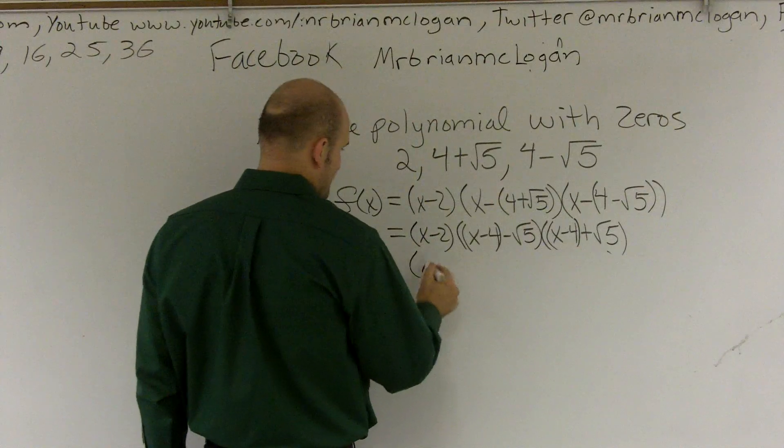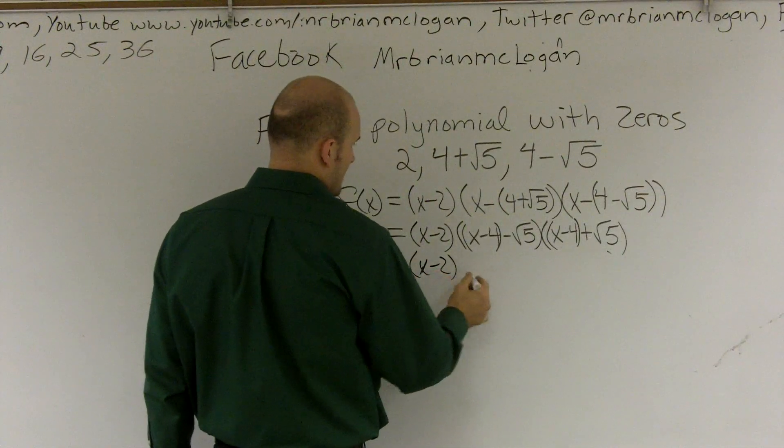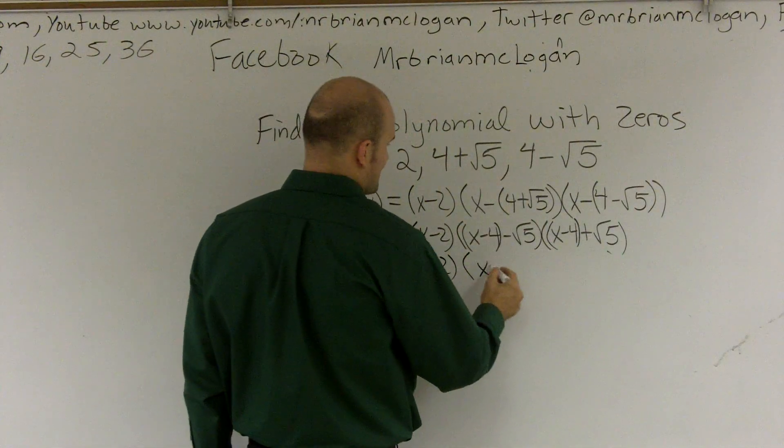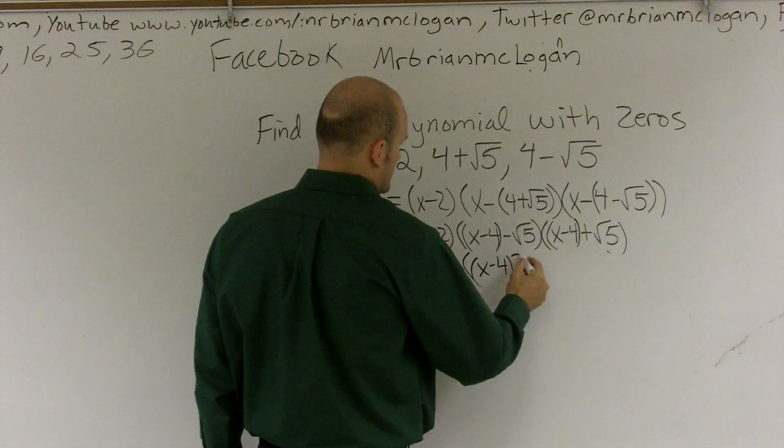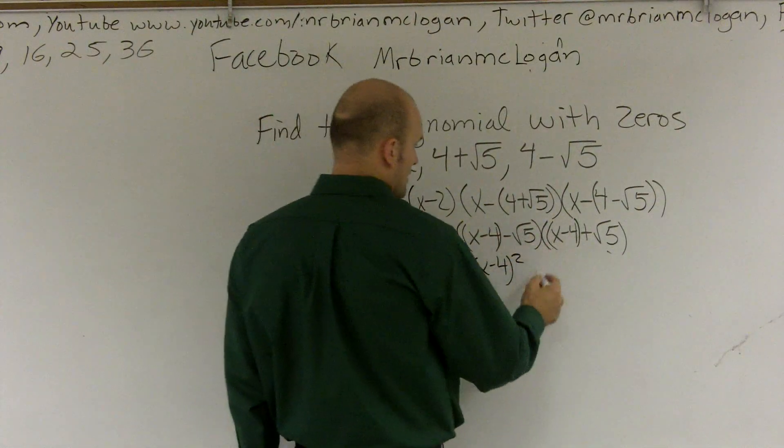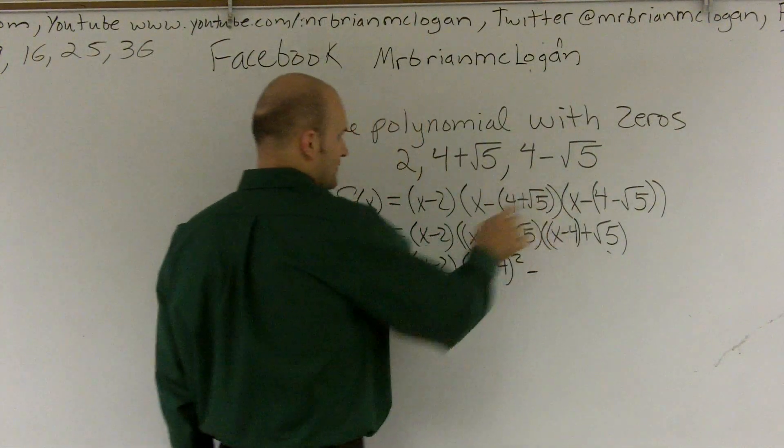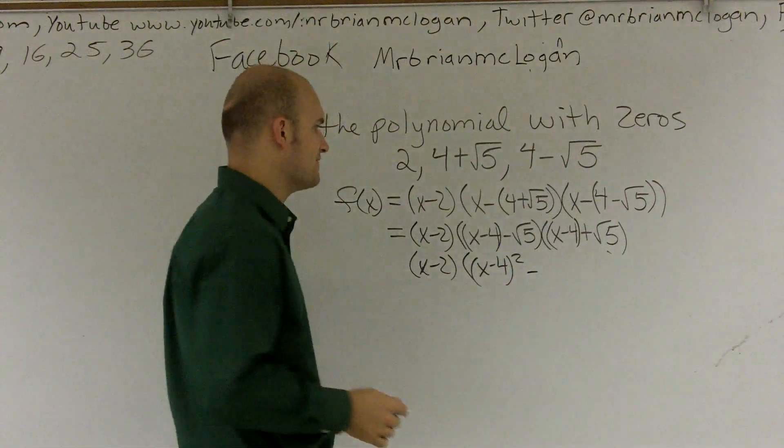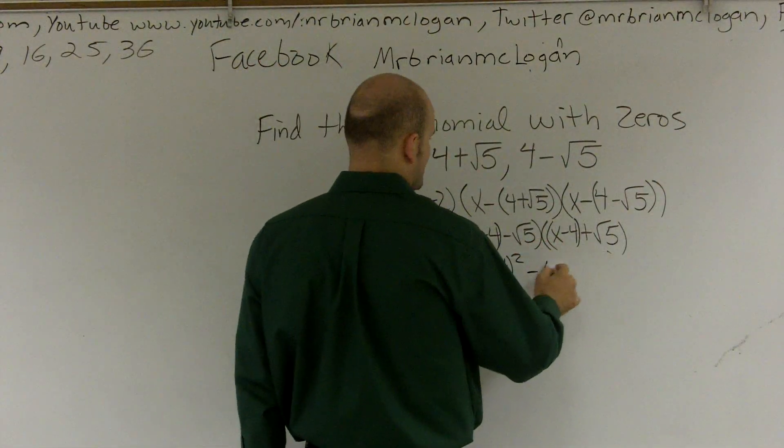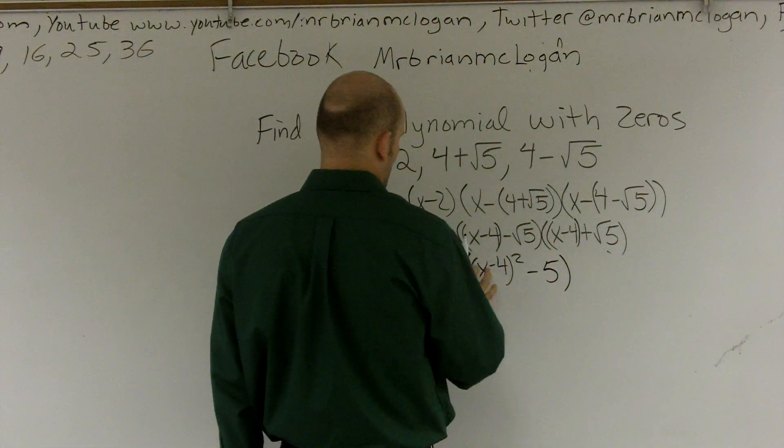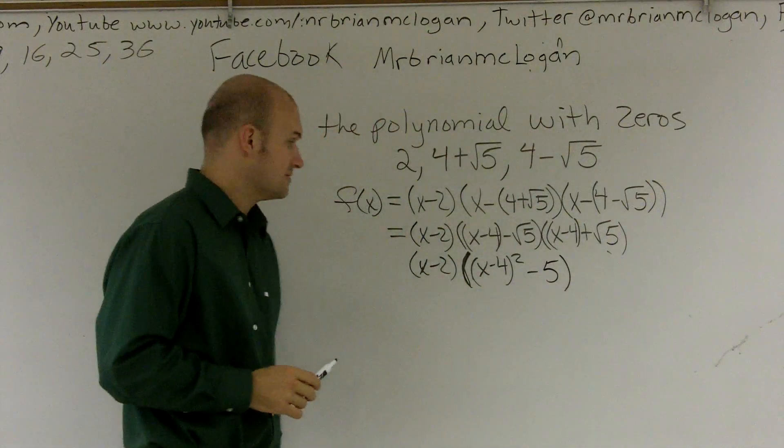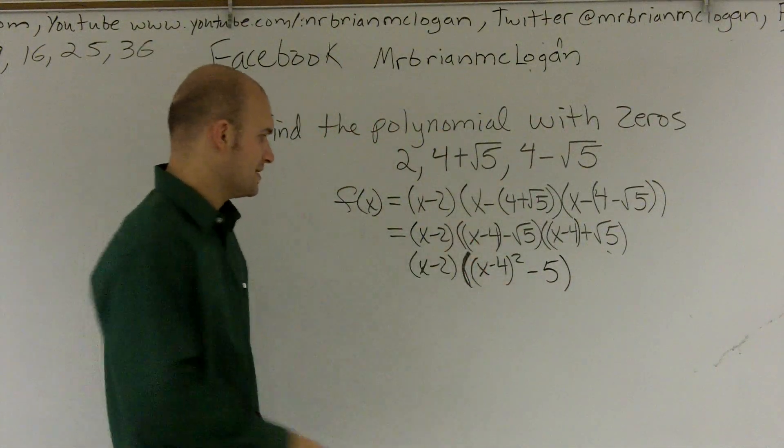So I still have this x minus 2 here. But now I can say this is x minus 4 squared minus square root of 5 times square root of 5, which would be square root of 25, which would be minus 5. And that's sweet.